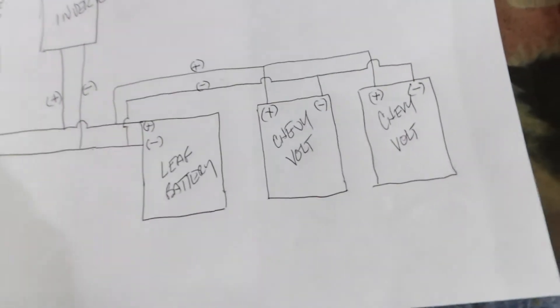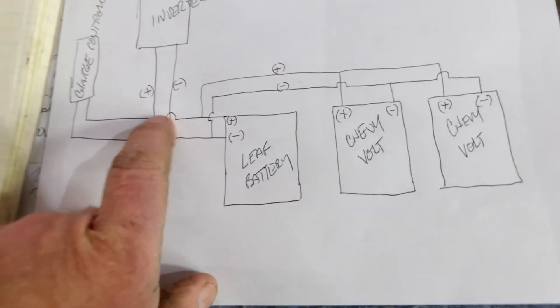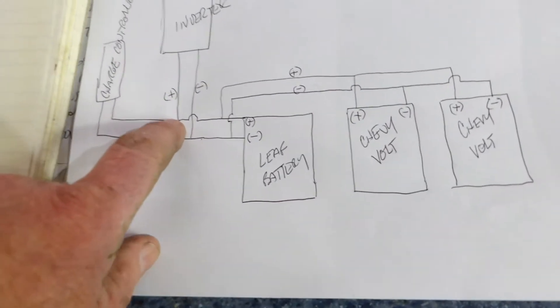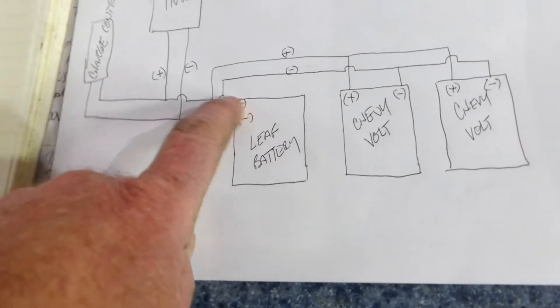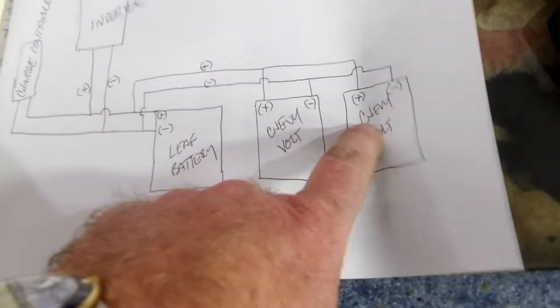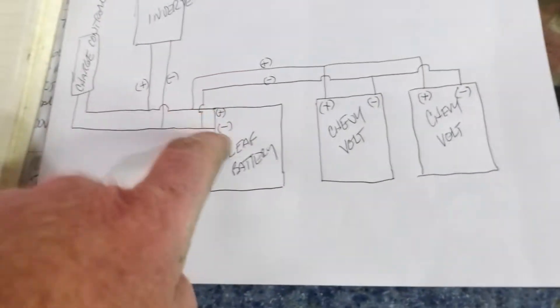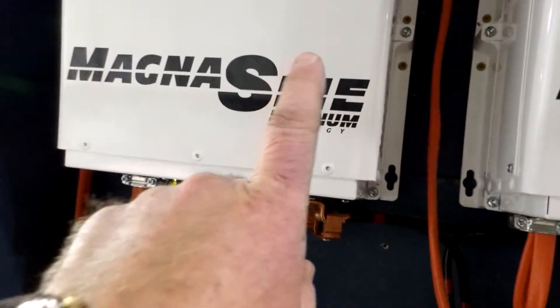They are in parallel, meaning the red positive wire that comes from the charge controller and goes to the inverter also goes to the positive on the Nissan Leaf pack and jumps over to the positive on the Chevy Volt, and likewise on the second Chevy Volt, and same for the negatives. To illustrate that, the charge controller wires come out - that's the positive - goes to a common lead and up to the Magnum inverter.